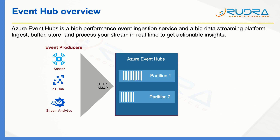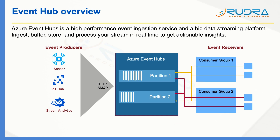In the end, all these events need to be processed. Those processing applications are generally called Event Receivers. For these Event Receivers, you can create different consumer groups within Event Hub. Each consumer group generally represents one application, and each consumer group can access multiple partitions and read the events at a different frequency. Let me take you through these key components of Event Hubs in a bit more detail.